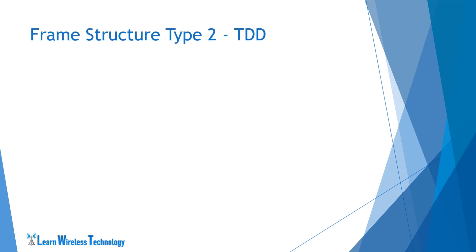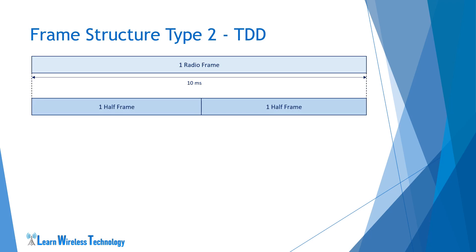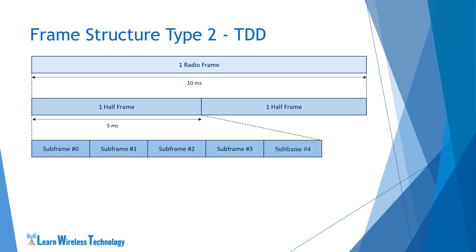Type 2 frame structure is used in TDD. One radio frame is 10 ms duration long. This radio frame is divided into two half frames of 5 ms each. Each half frame consists of 5 subframes numbered from 0 to 4, where each subframe has a 1 ms long duration. Unlike FDD where all 10 subframes can be used in either downlink or uplink, in TDD some subframes are used for downlink transmission while some are used for uplink transmission. This depends on the uplink-downlink configuration table defined in 3GPP specs.